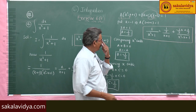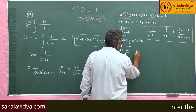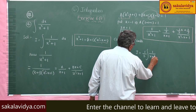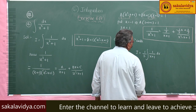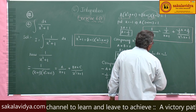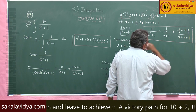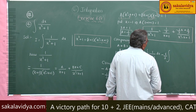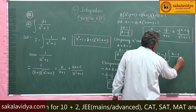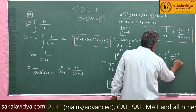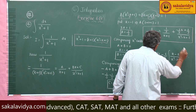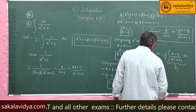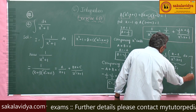Now the integral I is equal to 1 by 3 integral 1 by x plus 1 dx, minus 1 by 3 integral of x minus 2 by x square minus x plus 1 dx. Let us call this second part I₁ separately — this is equation 1.